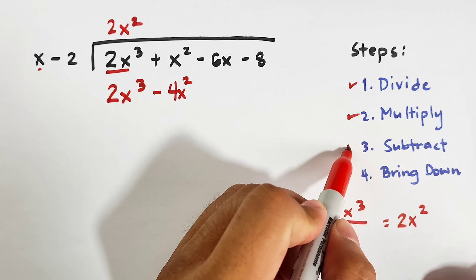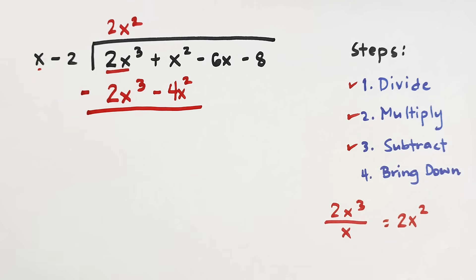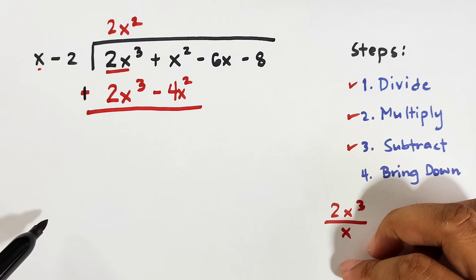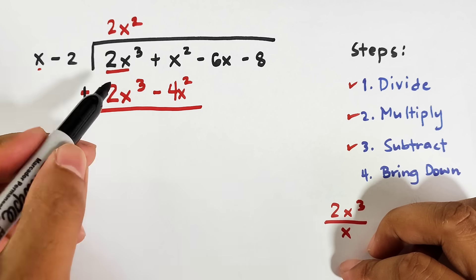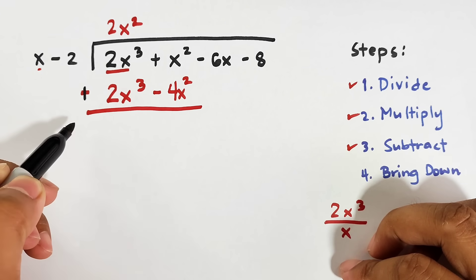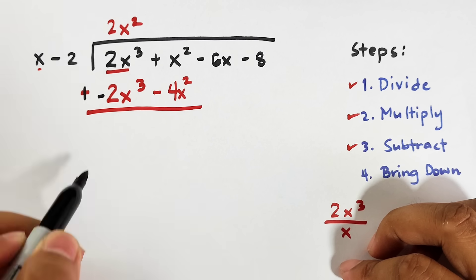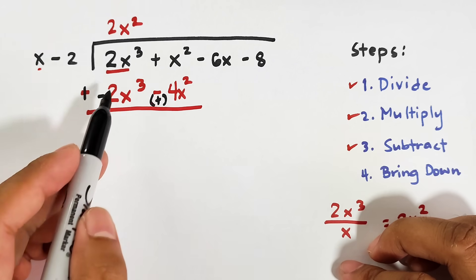Now we do the subtraction. This step might confuse you, but always remember that subtracting will lead you to addition. The subtraction symbol becomes addition, and the signs of the terms being subtracted will change — positive 2x cubed becomes negative, and the negative 4x squared becomes positive.